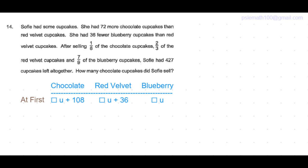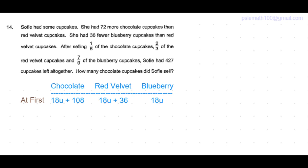After selling one sixth of the chocolate cupcakes, the number of cakes should be divisible by 6. Two thirds of the red velvet cupcakes means the number should also be divisible by 3, and seven ninths of the blueberry cupcakes means the number should be divisible by 9. So let's take the number of units to be the least common multiple of 6, 3, and 9, which is 18 units.